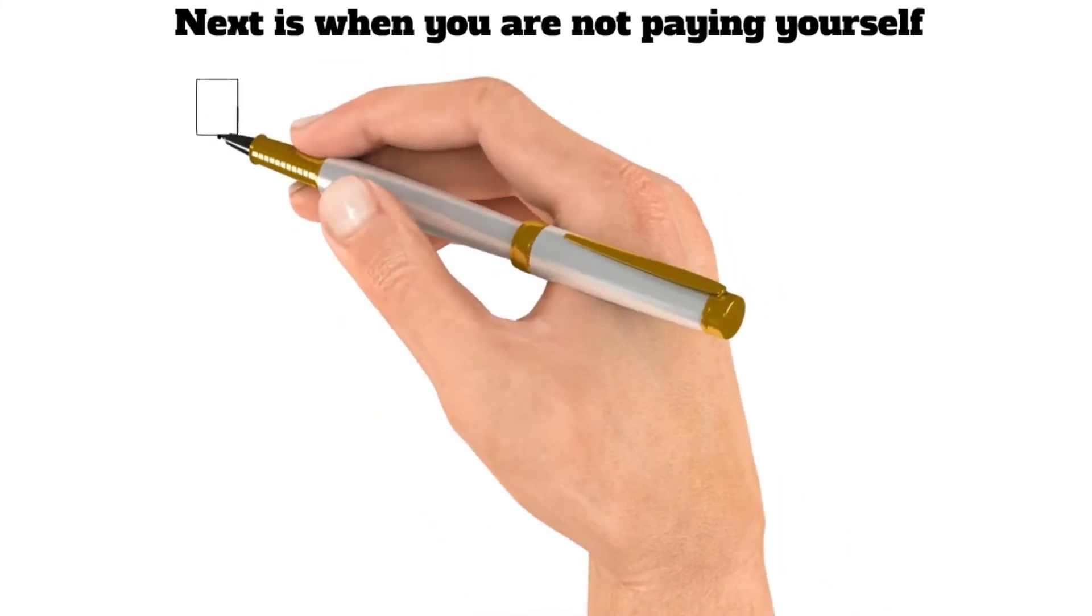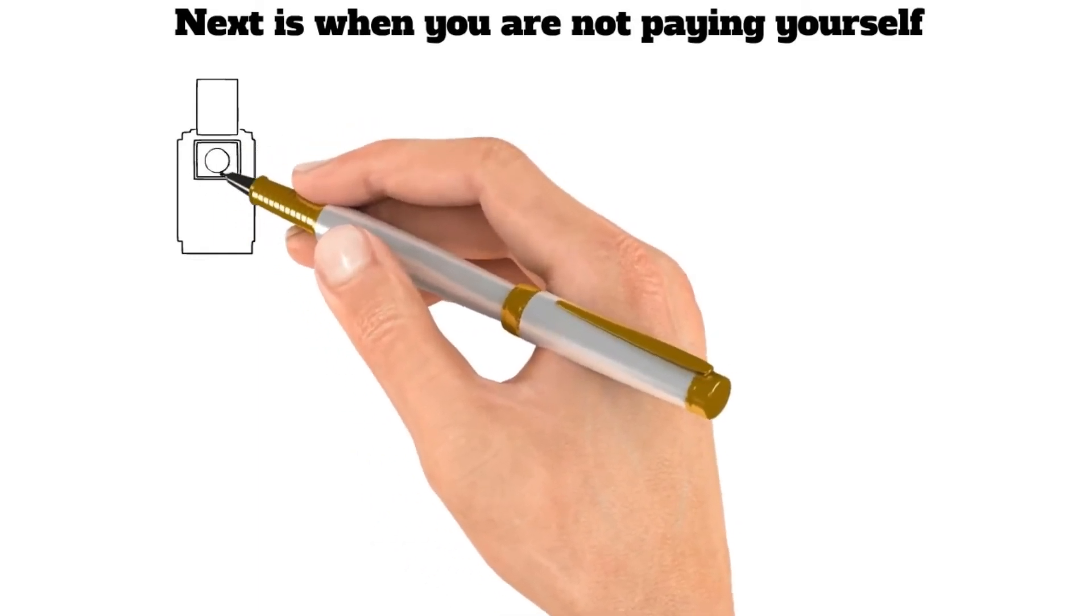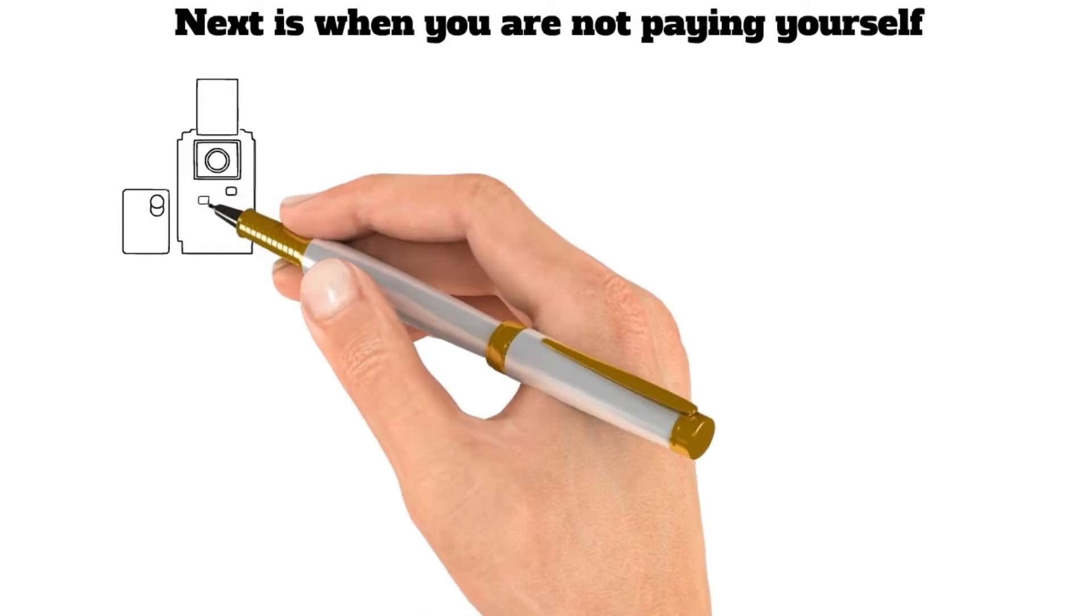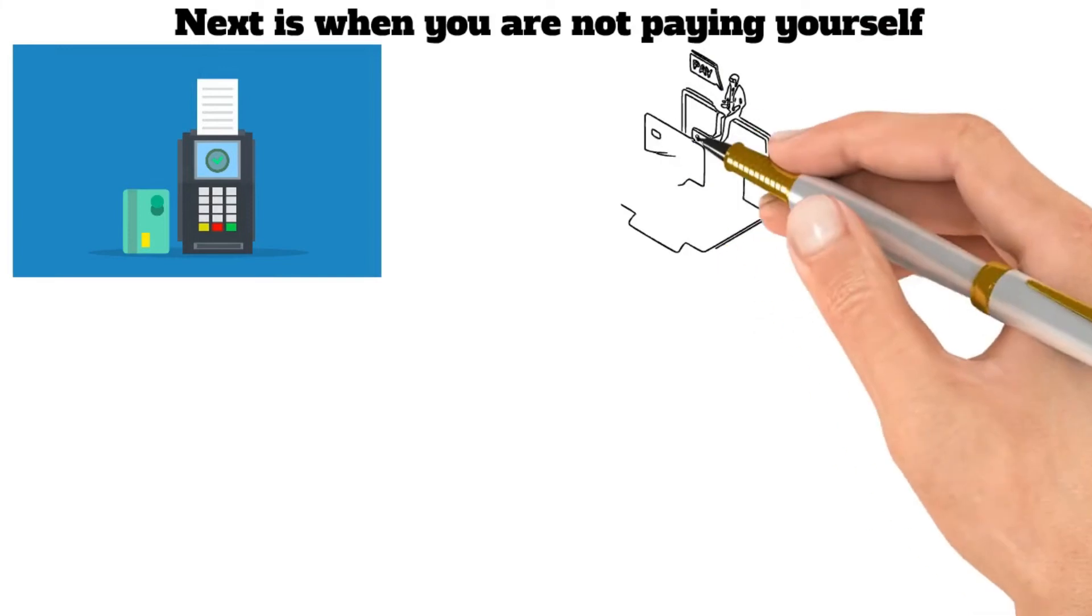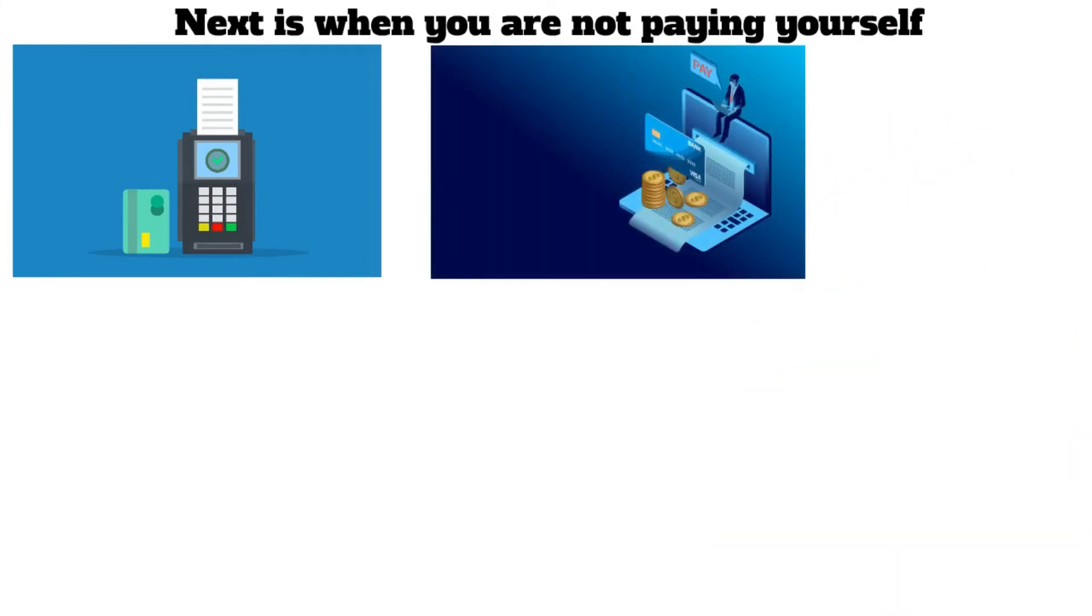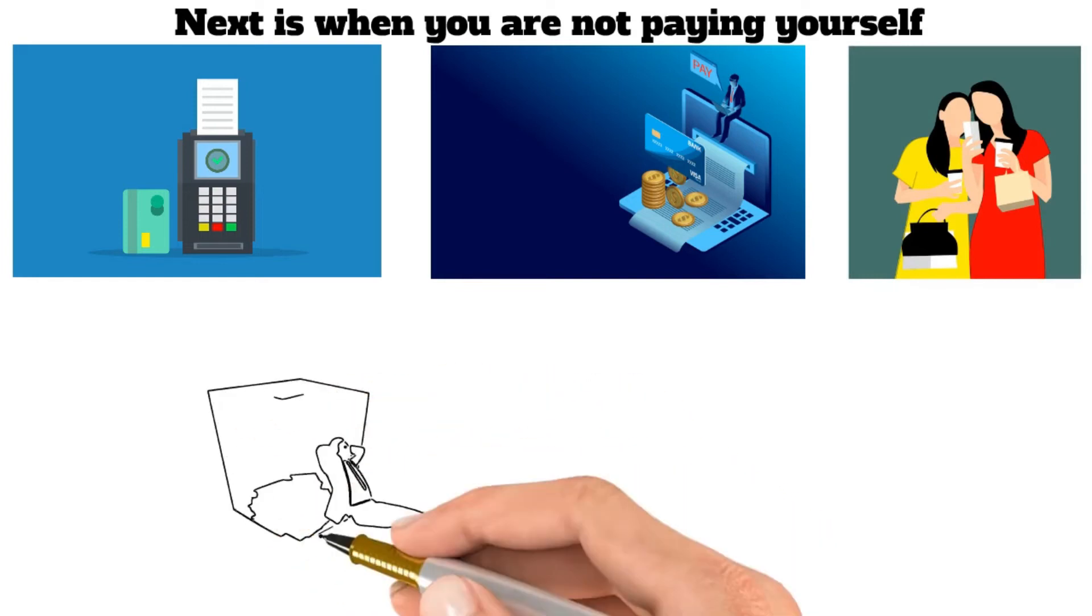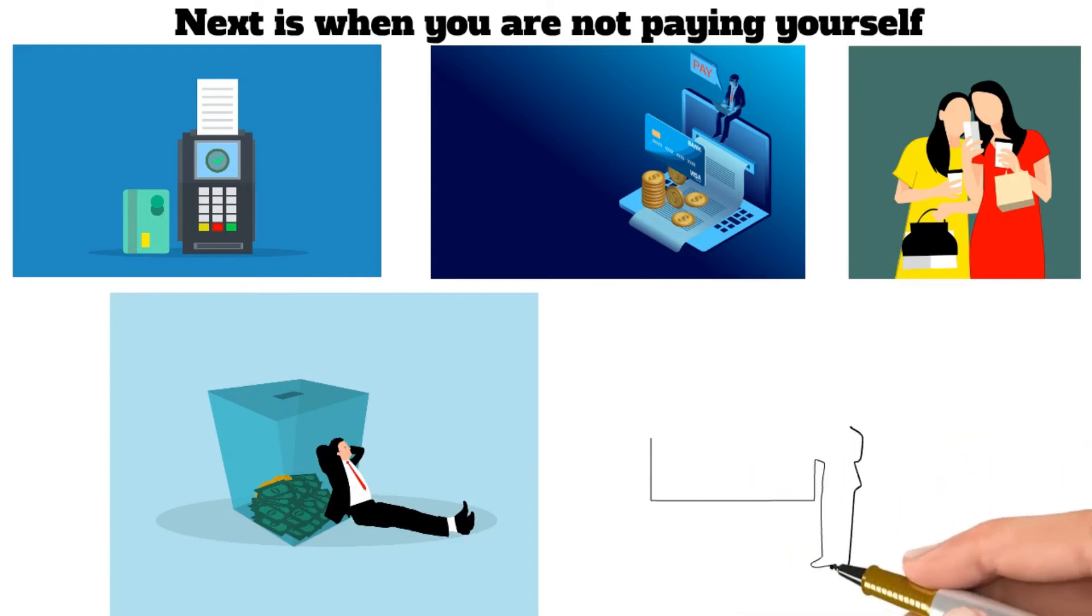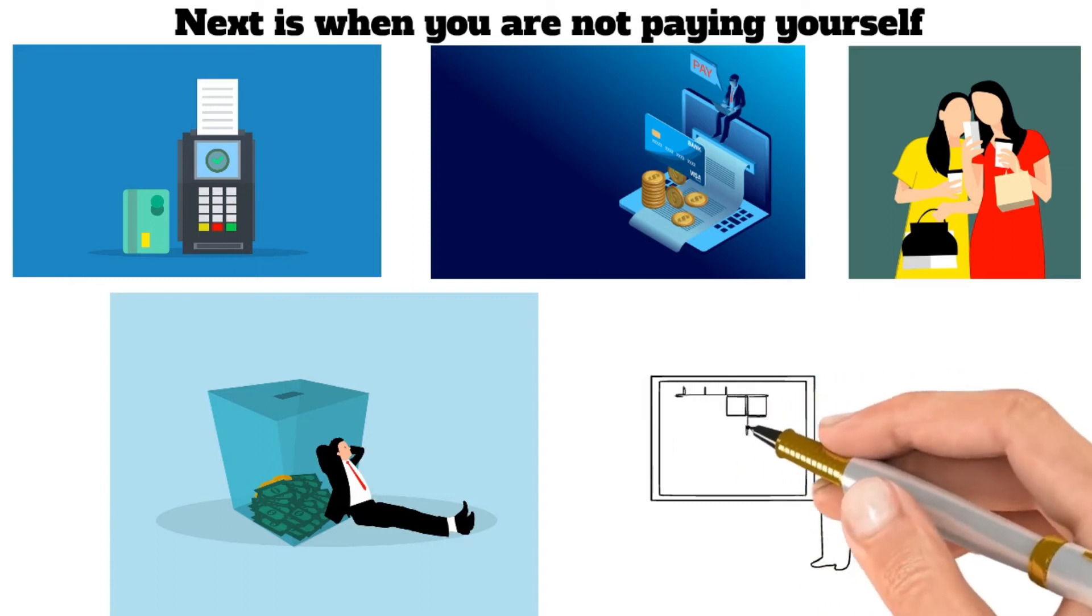Next is when you are not paying yourself. Another money habit that can keep you broke is not paying yourself. This can happen if you live paycheck to paycheck and don't have any money left after covering your basic expenses. Another way this can happen is if you have debt and are making minimum payments, or you may be spending money on things that are not essential like fancy coffee or new clothes, while neglecting to save for retirement or an emergency fund. Not paying yourself can also happen if you are self-employed and reinvest your earnings back into your business.